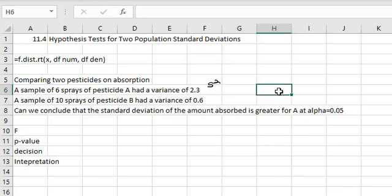If I actually wanted to know what the standard deviation is, we would have to do equals the square root of the 2.3 to get the standard deviation of 1.51, but we have the variance.